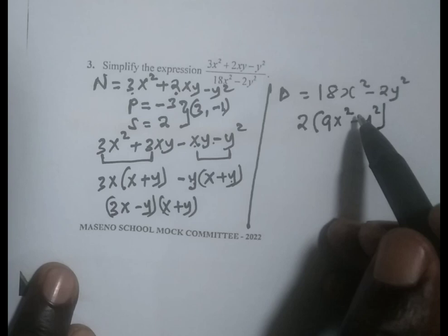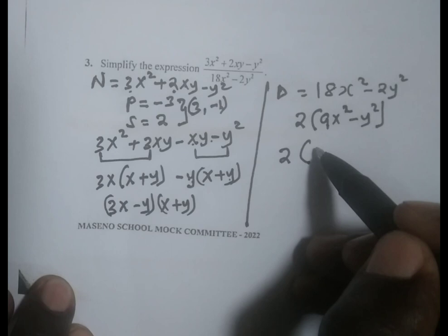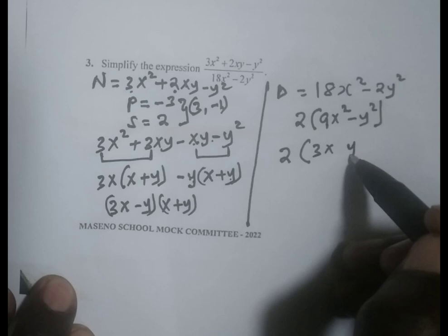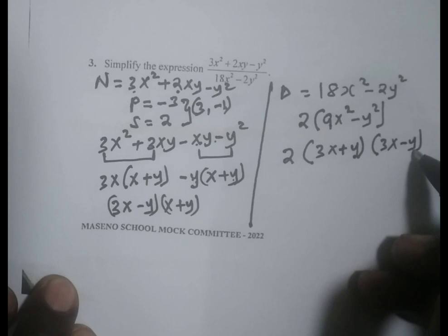Remember 9x squared minus y squared is a product of two squares. Therefore we are going to have 2 into: the square root of 9x squared is 3x, the square root of y squared is y. But remember the square root of a number is plus or minus. Therefore we have the first bracket being positive and another bracket being 3x minus y. From there now we can connect the numerator and the denominator.